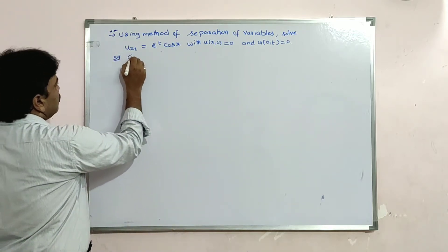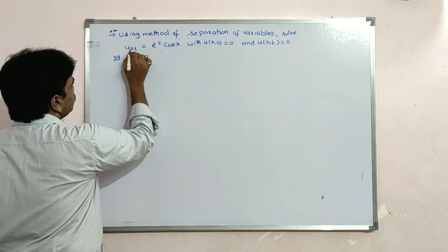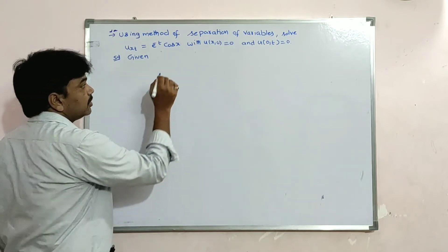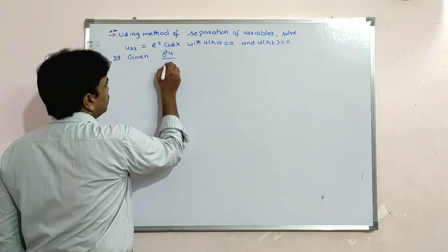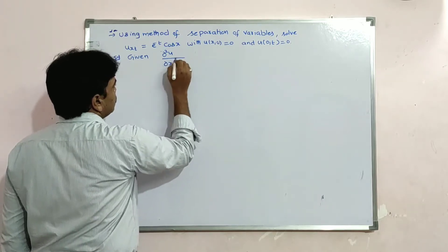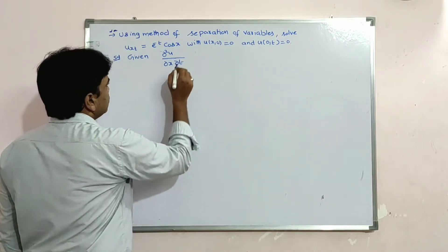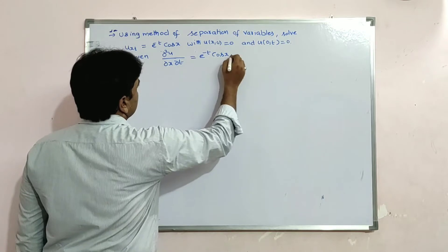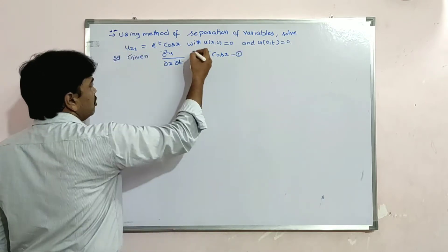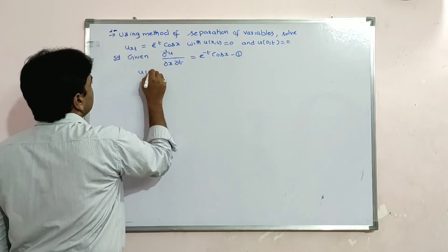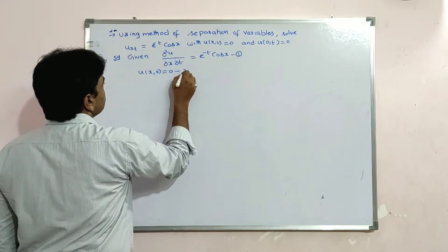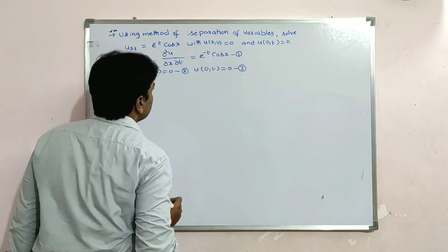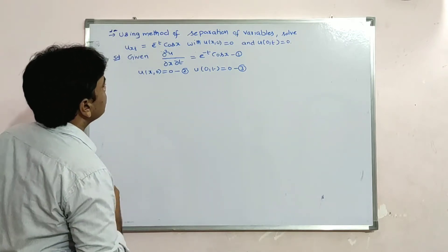Solution. The given equation u_xt means ∂²u/∂x∂t, and that is equal to e^(-t)·cos(x) — say this is equation 1. Moreover, the given conditions are: u(x,0) = 0, say this is condition 2, and u(0,t) = 0, say this is condition 3.